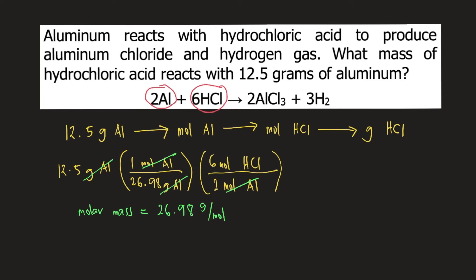Finally, we can convert moles of HCl into grams of HCl. We just need the molar mass of HCl. The molar mass of HCl is 36.458 grams per mole.